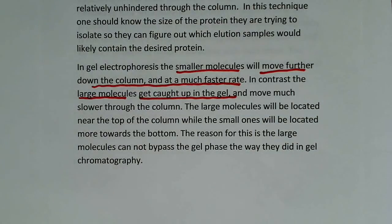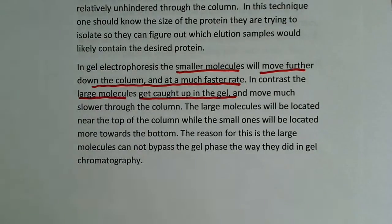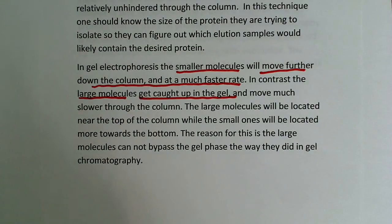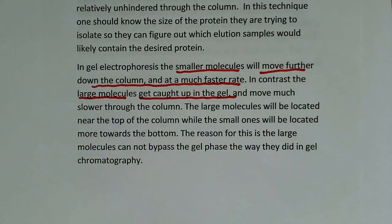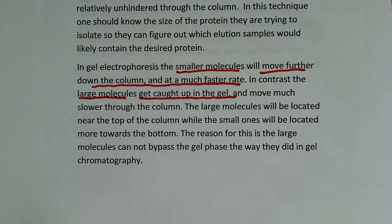If you were looking at one of these gel samples — there are pictures on the internet and other videos on YouTube where they actually perform the laboratory technique — you'll see that the smaller proteins are located more towards the bottom and the larger ones more towards the top. The reason is that the large molecules cannot bypass the gel phase the way they did in gel chromatography. In gel electrophoresis, the protein is forced to move through the column, so it gets caught up in the gel if it's larger — more surface area, more things to get caught up on.